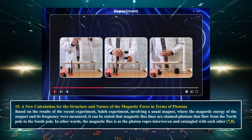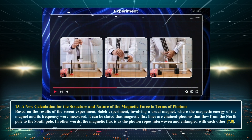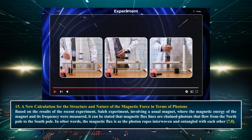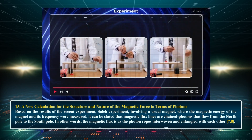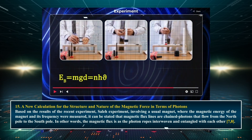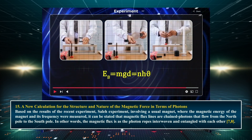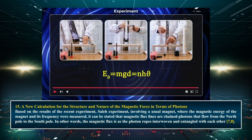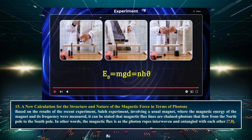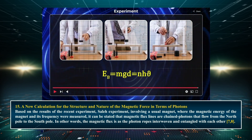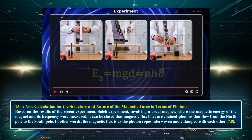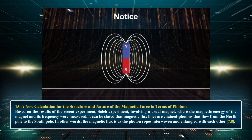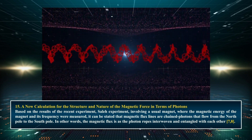Chapter 15: A new calculation for the structure and nature of the magnetic force in terms of photons. Based on the results of the Saleh experiment involving a usual magnet, where the magnetic energy and its frequency were measured, it can be stated that magnetic flux lines are chain photons that flow from the north pole to the south pole. In other words, the magnetic flux consists of photon ropes interwoven and entangled with each other.